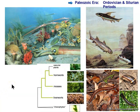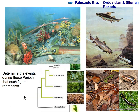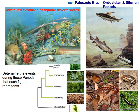Here we're looking at the Ordovician and Silurian, which I've lumped together since the Ordovician was relatively short. Each figure represents a different event — it's mainly a continuation of evolution, looking at how life evolved through time. We see the continued evolution of aquatic invertebrates, much more complex life compared to the Cambrian, along with the evolution of the first vertebrates — in other words, fish.